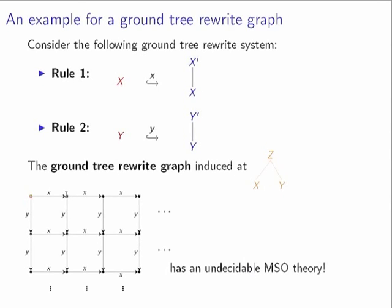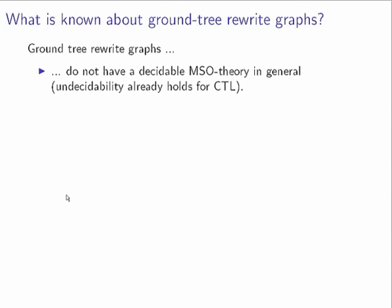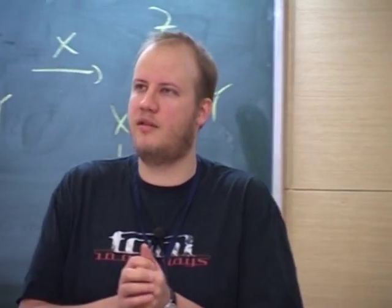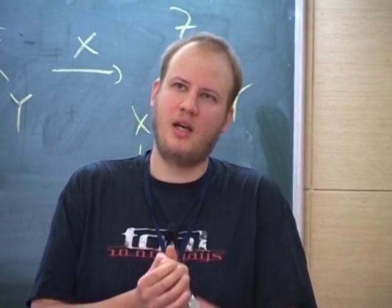Let me recall what is known about ground tree rewrite systems. First of all, as we just saw, they do not have a decidable MSO theory in general. This lower bound basically already holds for CTL.